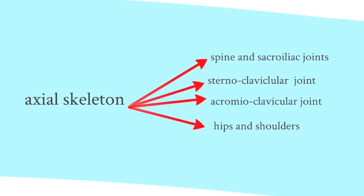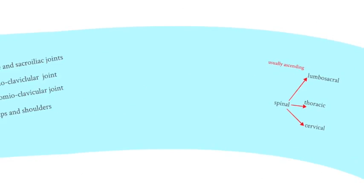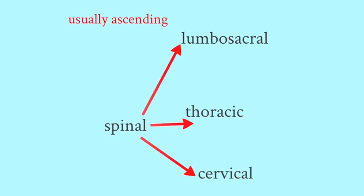The axial skeleton is considered to be the spine and sacroiliac joints, but it can include sternoclavicular and acromioclavicular joints. For the purposes of this disease, we're going to include the hips and shoulders. There's usually an ascending involvement starting at the lumbosacral area and then involving thoracic or cervical area, but this doesn't occur in all cases. In some cases the reverse is the case, and cervical spine involvement occurs first.